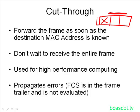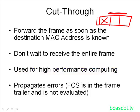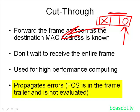Cut-through is much faster — it cuts down on latency because we're not waiting for the entire frame. It's generally used when high-performance computing is required on a network. However, there is a problem: since we start forwarding before the entire frame is received, part of the frame is already being forwarded before the frame check sequence in the trailer has been examined. This means errors can be propagated in frames, which is a major drawback to this method.